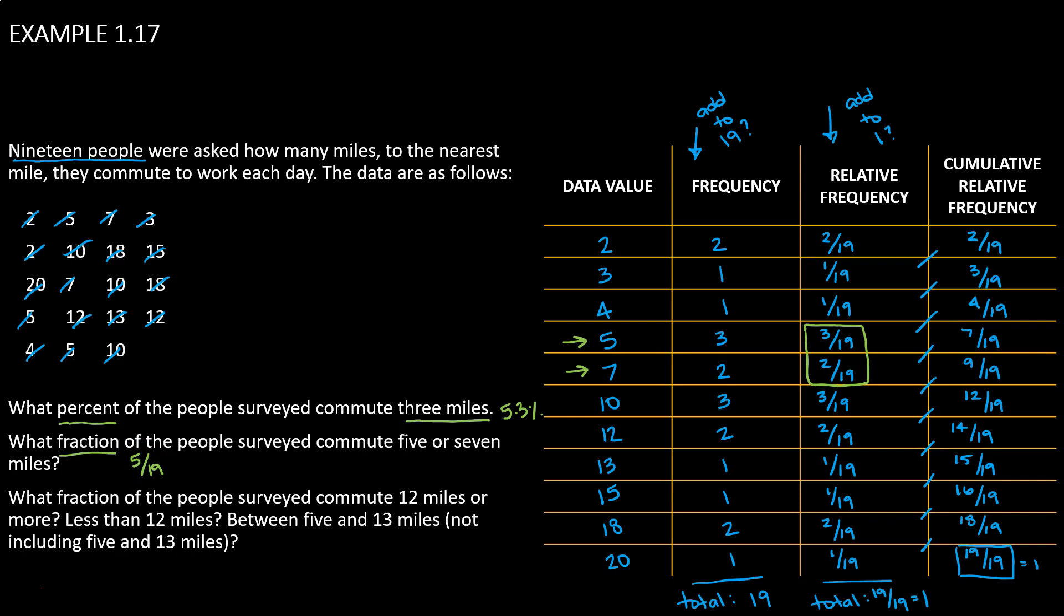What fraction of the people surveyed commute 12 miles or more? 12 miles or more, we're going to look at our 12. Or more would be the rest of these guys. So we're going to add the fractions that correspond to those data values.